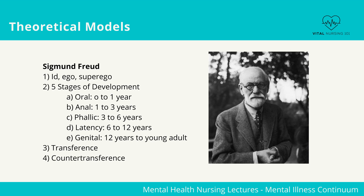Freud's five stages of psychosexual development are: Oral (0–1 year), Anal (1–3 years), Phallic (3–6 years), Latency (6–12 years), and Genital (12 years to young adult).